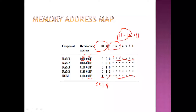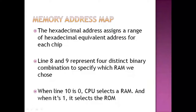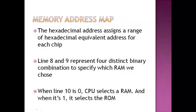This way the address mapping is done. We have a system where hexadecimal addresses are assigned for each RAM and ROM chip through the memory address map. Lines 8 and 9 represent the four different RAM chips. If you need 8 or 16 RAM chips, the configuration will be different. Since we have only one ROM, when line 10 is 1, it selects the ROM. This is the organization of the memory for 512 bytes of RAM and 512 bytes of ROM.